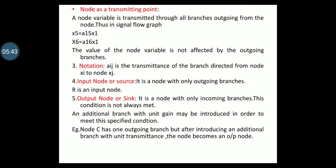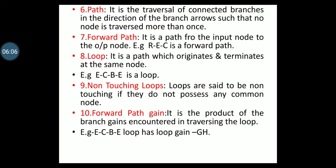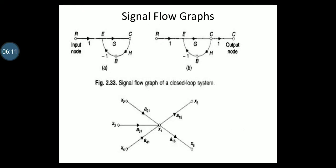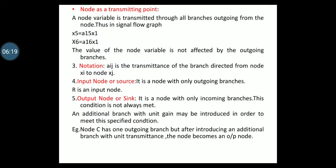The notation Aij is the transmittance of the branch directed from node Xi to node Xj. Next, input node or source: it is a node with only outgoing branches. In the figure, R is an input node.